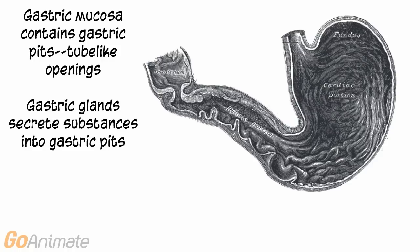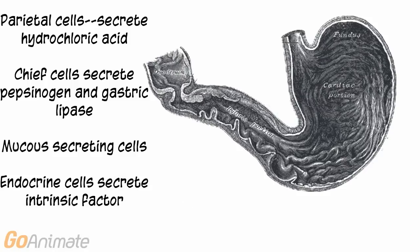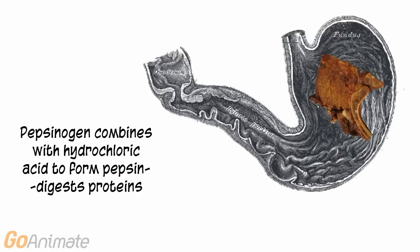The inner lining of the stomach, the gastric mucosa, contains gastric pits or tube-like openings. Gastric glands secrete substances into these gastric pits. The cells of the stomach include parietal cells which secrete hydrochloric acid, chief cells which secrete pepsinogen and gastric lipase, mucus-secreting cells which secrete an alkaline mucus, and endocrine cells which secrete intrinsic factor that helps with vitamin B12 absorption. Pepsinogen combines with hydrochloric acid to produce pepsin, which digests proteins.